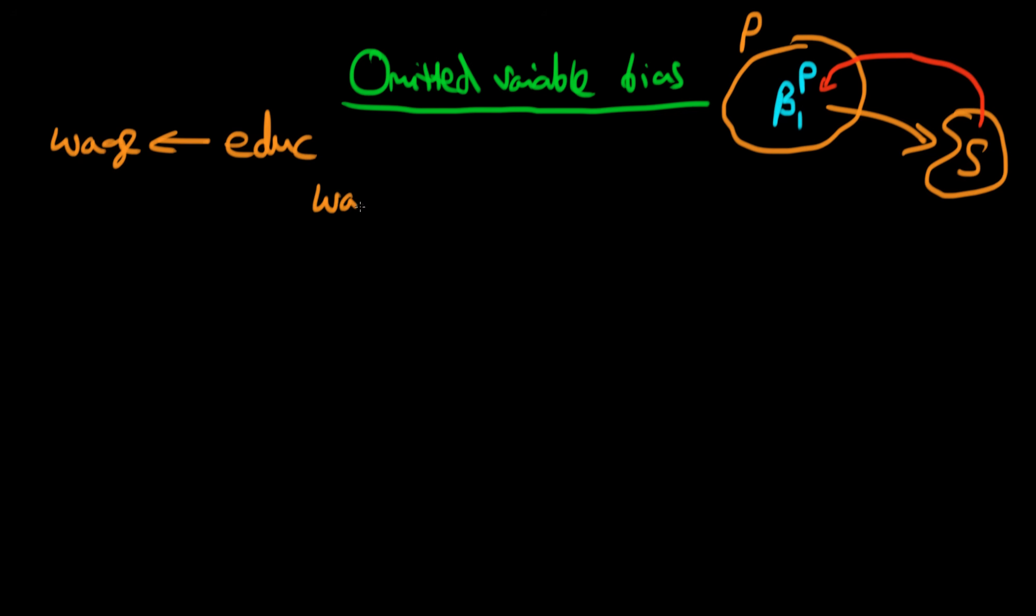As a first stab at this problem, we estimate the following relationship on our sample: an individual's wages is determined solely by their level of education. There are other idiosyncratic factors we're not including in our relationship, represented by this error term u_i. We know that if we estimate using least squares